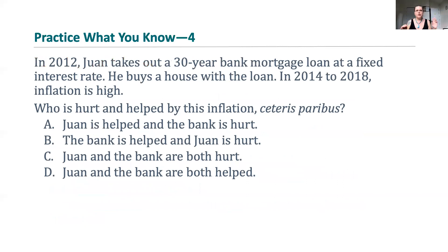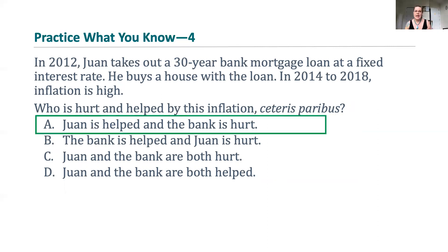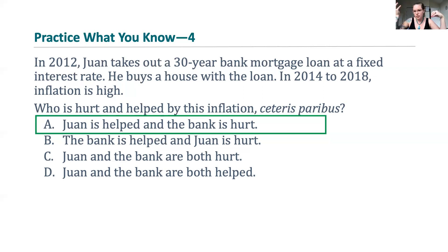Let's practice. In 2012, Juan takes out a 30-year bank mortgage at a fixed interest rate — fairly typical. He buys the house with the loan, and then from 2014 to 2018, inflation is really high. Who is hurt and who is helped, holding everything else constant? The correct answer is: Juan is better off and the bank is hurt. Let's suppose Juan borrowed $200,000. In the next few years, inflation causes housing prices to rise to $250,000, but he still only owes the bank $200,000 plus interest. The bank is hurt because the money it receives from Juan as he pays back the loan is worth less than the money they loaned him.